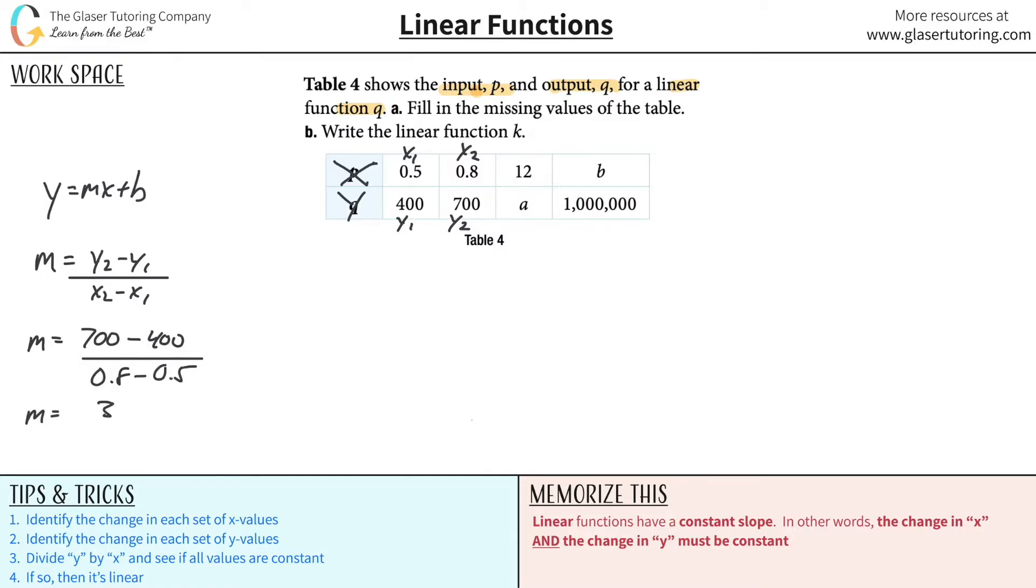Just doing some math. We got 300 on the top, then we're going to have 0.3 on the bottom. And then when you divide one into the other, it's going to work out to be 1000. That is the slope. So now that we have the slope here, what can we do?